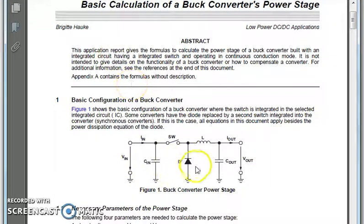This is an application note regarding the basic calculation of buck converter pass stage from Texas Instruments. This is how the circuit looks. As you can see here, we have two switches in the previous case. Here, these two switches are combined. One switch is just a normal switch. It could be replaced with some electronic switch. Another one is replaced with the diode. As you can see, both the input and output has capacitors.